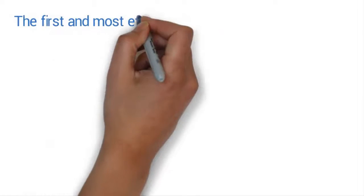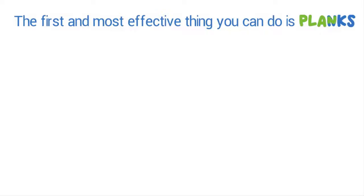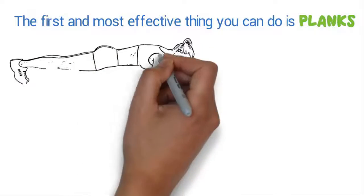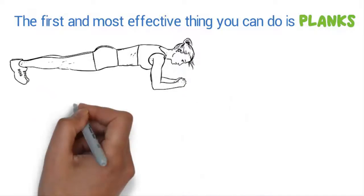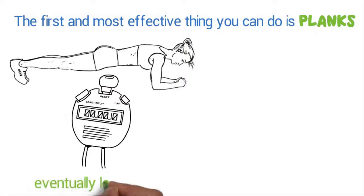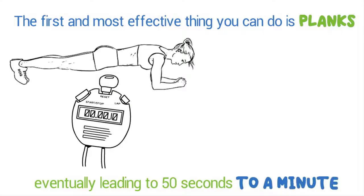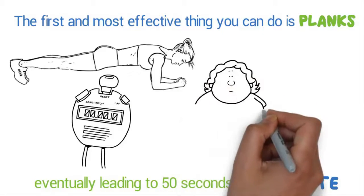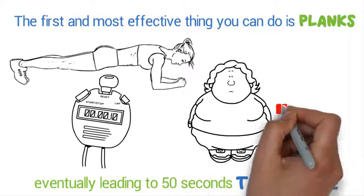The first and most effective thing you can do is planks. Try to stay in a plank position for some time daily. You can start off by 10 to 15 seconds daily, eventually leading to 50 seconds to a minute. Planks are really effective in burning belly fat and give immediate results.